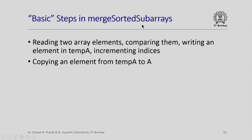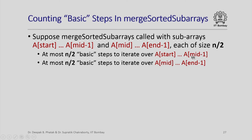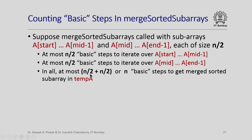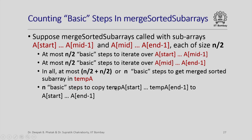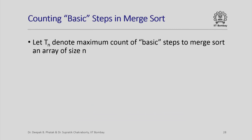Now let us count the basic steps in merge_sorted_sub_arrays. A basic step consists of reading two array elements, comparing them, writing one to temp_a, and incrementing indices. Since we iterate over each sorted sub-array in a single pass, at most n/2 basic steps are needed per sub-array — so at most n/2 + n/2 = n basic steps to build the merged array in temp_a. Copying temp_a back to 'a' requires n more basic steps. Overall, at most 2n basic steps are required.